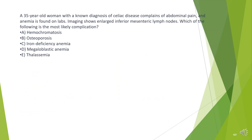A 35-year-old woman with a known diagnosis of celiac disease complains of abdominal pain, and anemia is found on labs. Imaging shows enlarged inferior mesenteric lymph nodes. Which of the following is the most likely complication?